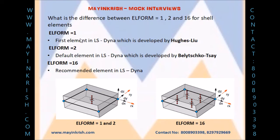EL form 1 has only one integration point at the center, but if you observe here we are having five integration points. These integration points are nothing but NIP — number of integration points along the thickness. These are also nothing but Gauss integration points.